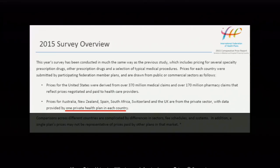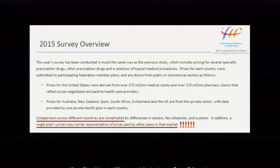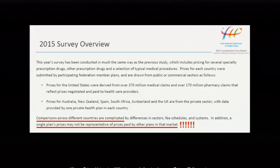To add insult to injury, the source itself warns you at the end of the methodology page: "Comparisons across different countries are complicated" and "Single plan prices may not be representative of prices paid by other plans in that market." So the source essentially tells you not to use the data this way. You cannot just download the data and plot it in graphs, claiming prices in the United States are crazy. You need more research, more information, and you need to compare this source to other sources. This kind of quick assessment of data quality can be learned and taught to anybody — you don't need advanced knowledge of numbers to understand why this is problematic.